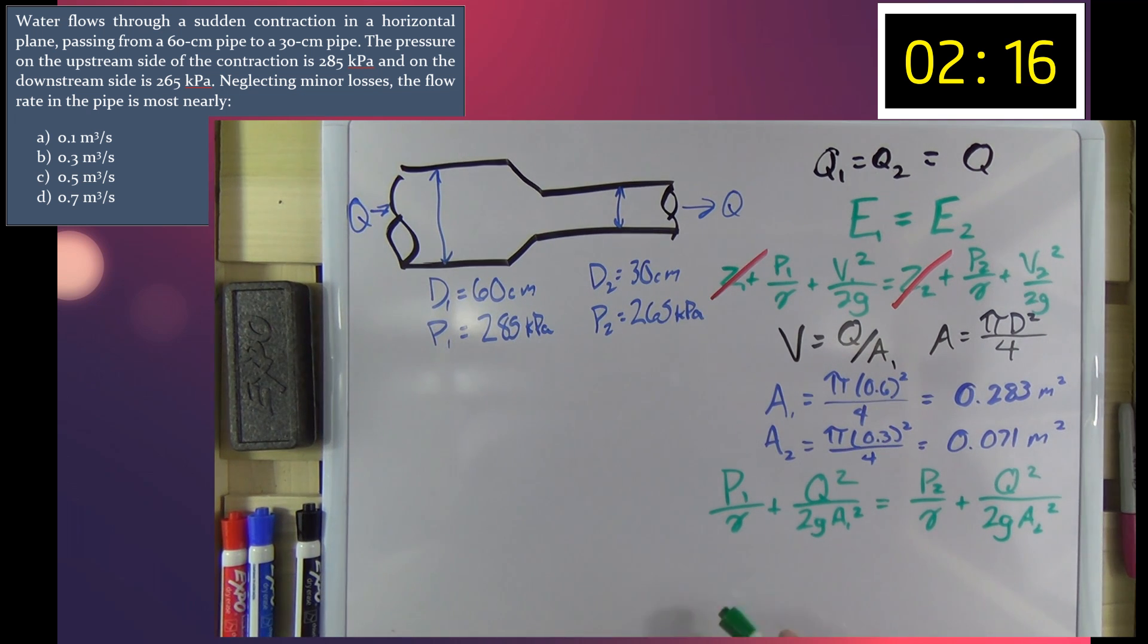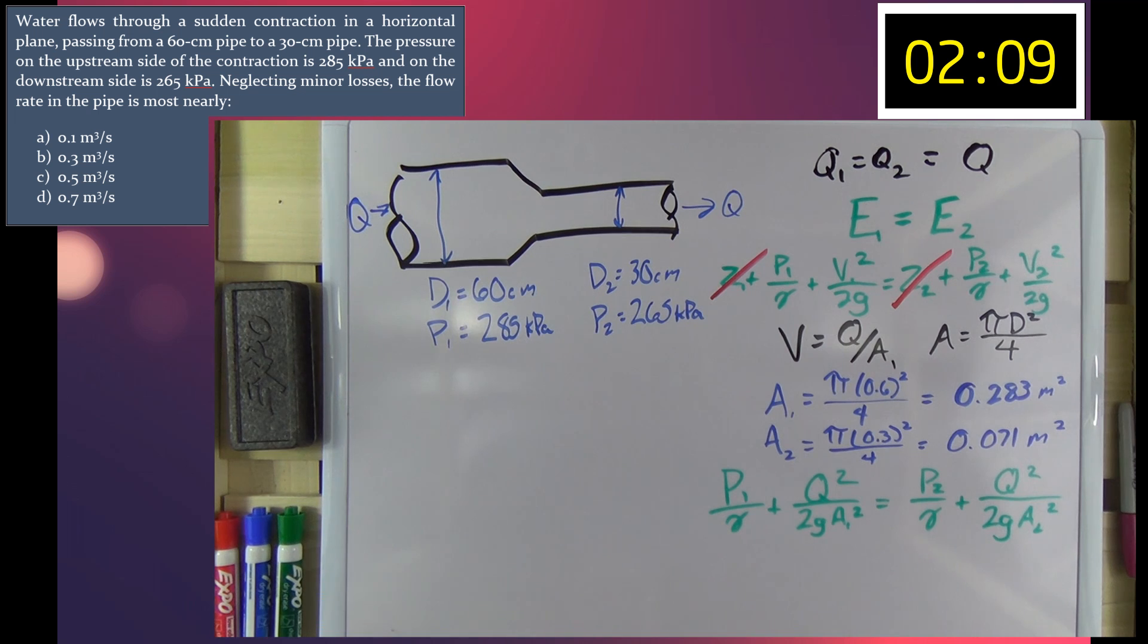Now you probably notice that the only variable in this equation that we do not know the value of is Q, so from here on out it's basically just algebra, plug and chug.